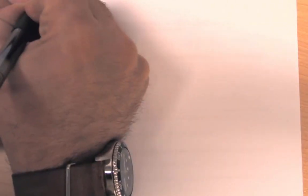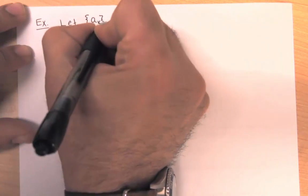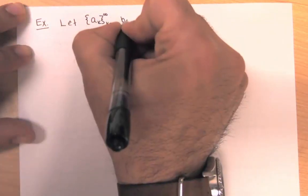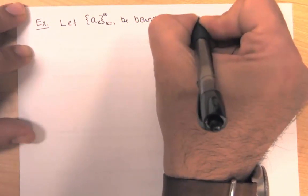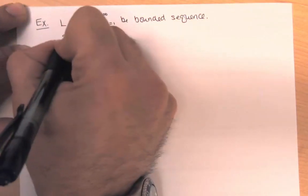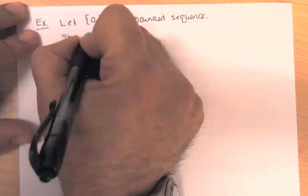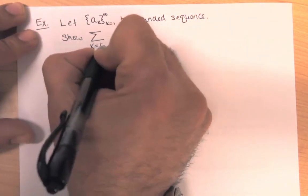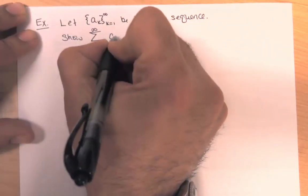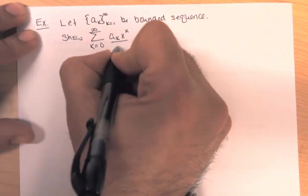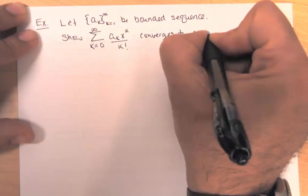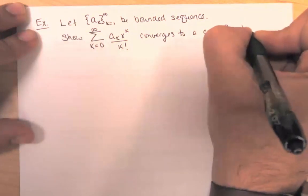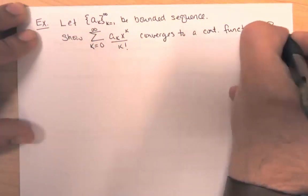Let's deploy our Weierstrass M-test in an example. Let {a_k}_{k=1}^∞ be a bounded sequence. We are going to show, using the Weierstrass M-test, that the series Σ a_k · x^k / k! converges to a continuous function on the entire real line.